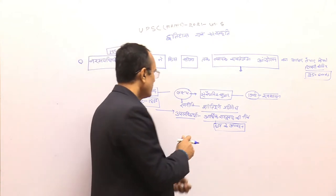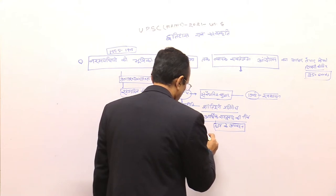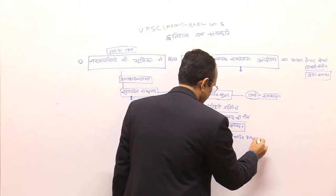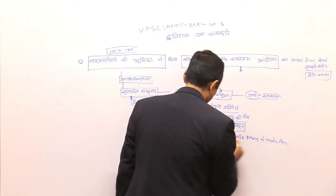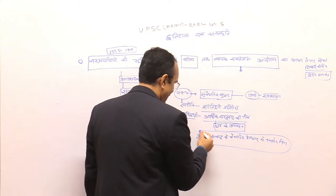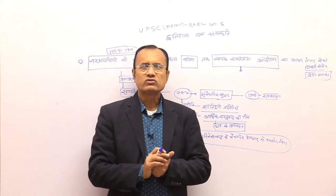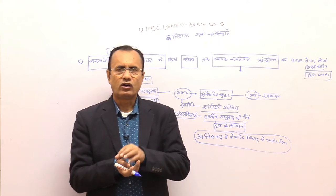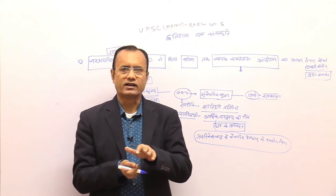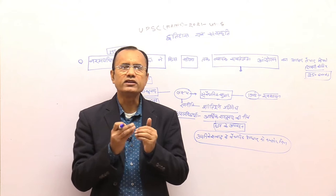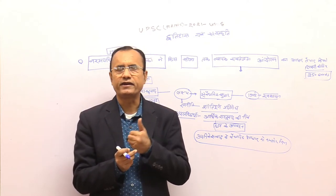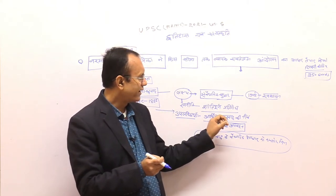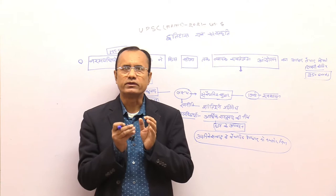तीसरा इन्होंने उपनिवेशवाद के वैचारिक आधार को कमजोर किया। अब देखो उपनिवेशवाद के वैचारिक आधार क्या था। उपनिवेशवादी शासन जो था यह सभ्यता mission के सिद्धांत में विश्वास करता था और वो इस बात को स्थापित करने का प्रयास कर रहा था कि अंग्रेज भारत में भारतीयों के हित में काम करने के लिए आए है भारतीयों को सभ्य बनाने के लिए आए है। इस सभ्यता mission की जो उनकी आधार ना थी उसका वैज्ञानिक तरीके से खंडन हमारे नरमपंथी राष्ट्रवादियों ने किया।